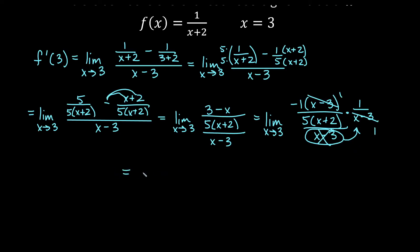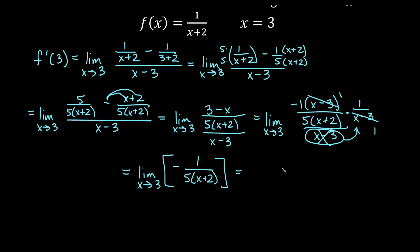We end up with the limit as x approaches 3 of negative 1 over [5(x + 2)]. Plugging in x = 3: negative 1 over 5 times (3 + 2) = negative 1 over 5 times 5 = negative 1 over 25. So the slope of the tangent line for this function at x = 3 is negative 1/25. Thanks for watching everybody, we'll see you next time.